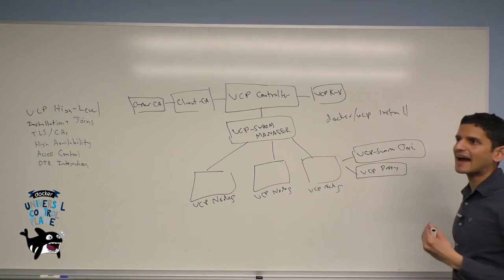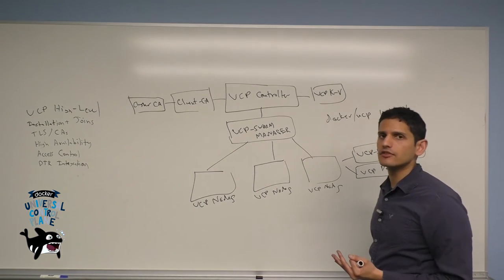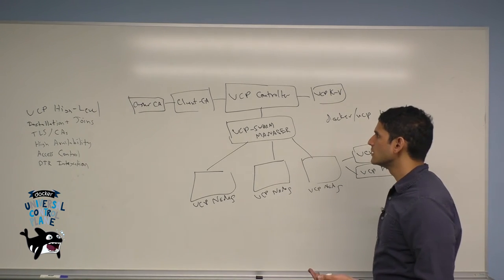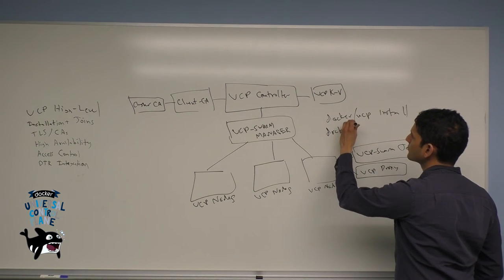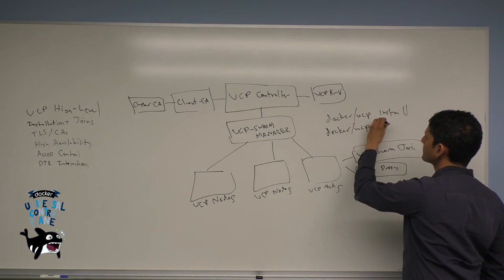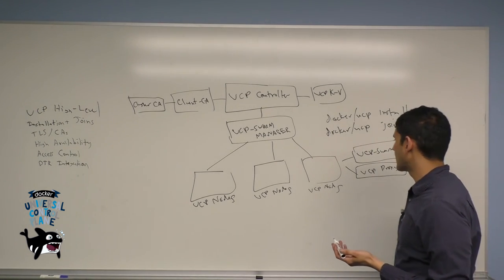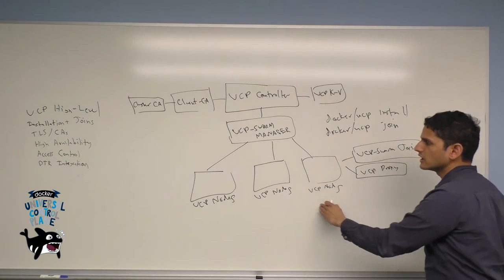When you want to create and add new nodes to the cluster, you'll stand up your node using whatever process you use, whether it's spinning up a VM or bringing a physical server online. Then you'll run the same docker UCP tool, except you'll do what's called a join. The join is itself another bootstrapper container that adds the UCP swarm join and the UCP proxy to each node.